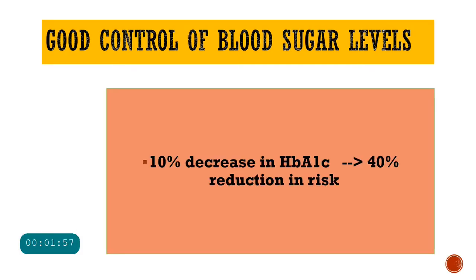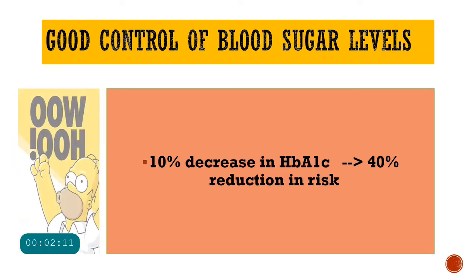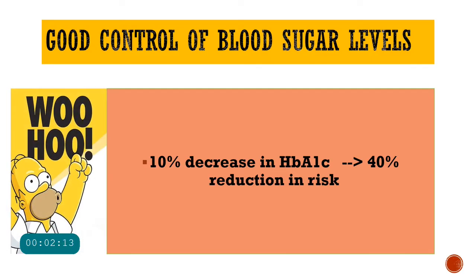Control of blood sugar levels is very important. It is shown that about a 10% decrease in HbA1c — which is a marker of glycemic control — can actually lead to about a 40% decrease in the risk of diabetic retinopathy. So just a 10% decrease in HbA1c can show a 40% reduction in risk.